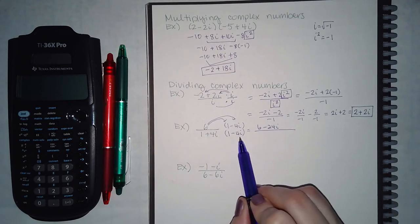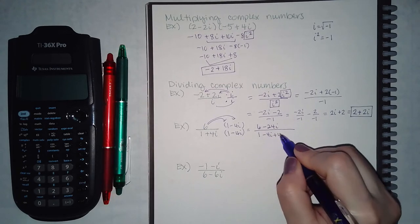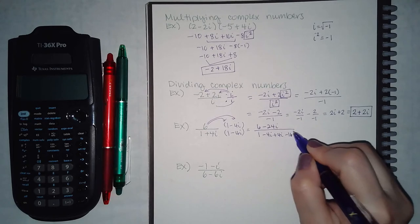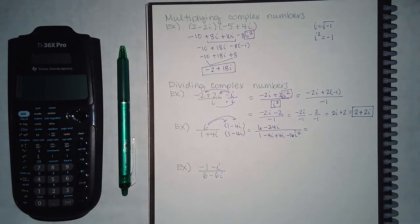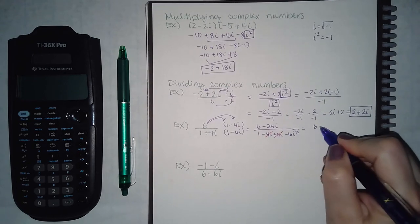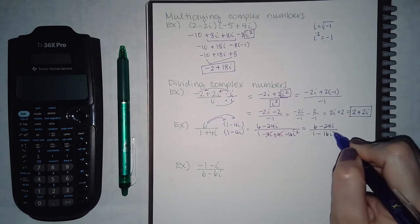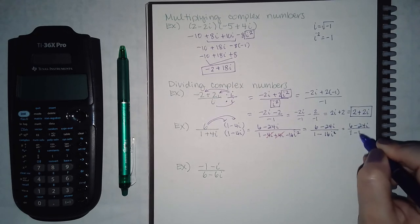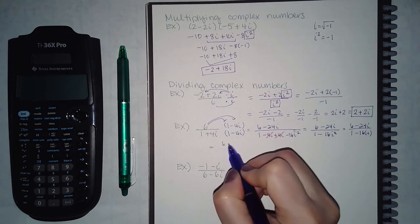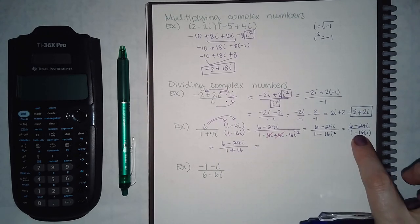On the bottom I have a binomial times a binomial, so I FOIL: 1 times 1, 1 times negative 4i, 4i times 1, and 4i times negative 4i which is negative 16i squared. The two middle terms are opposite signs so they cancel out. I have 6 minus 24i on top, and 1 minus 16i squared on the bottom. Since i squared equals negative 1, I substitute.